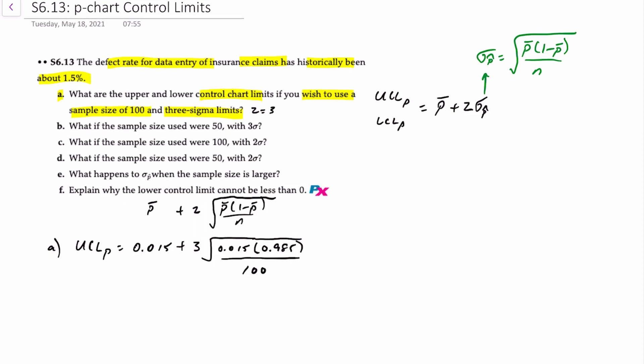We take the square root of all that. If we break that down a little bit, that equals 0.015 plus 3 times 0.01215, and that will give you a final answer of 0.0515.